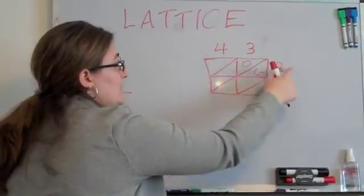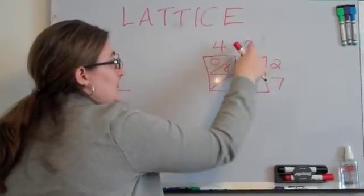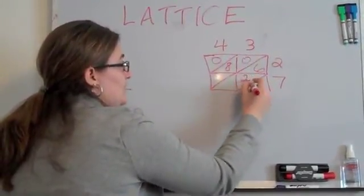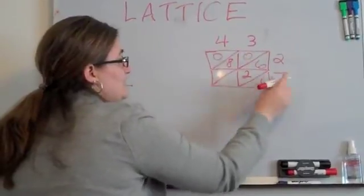Now I'm going to do 4 times 2, and that's 8. 3 times 7 is 21, and 4 times 7 is 28.